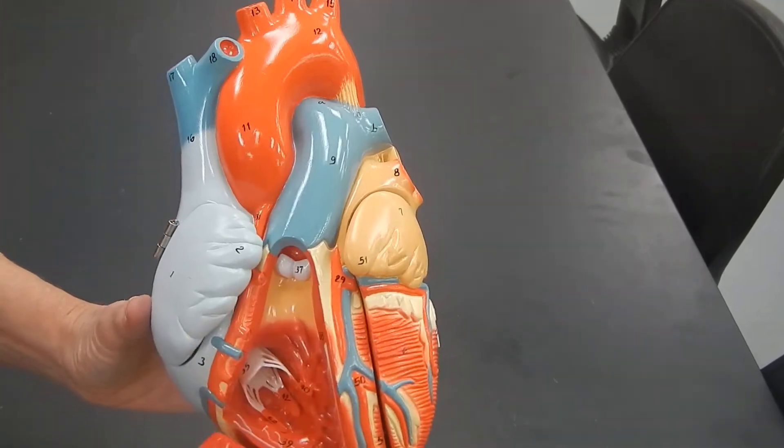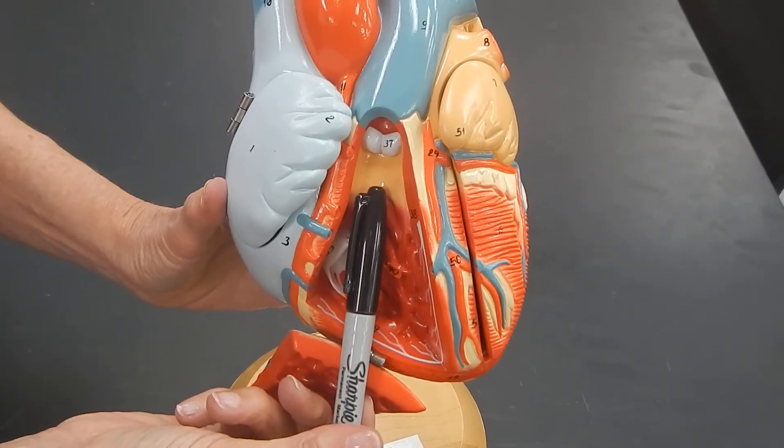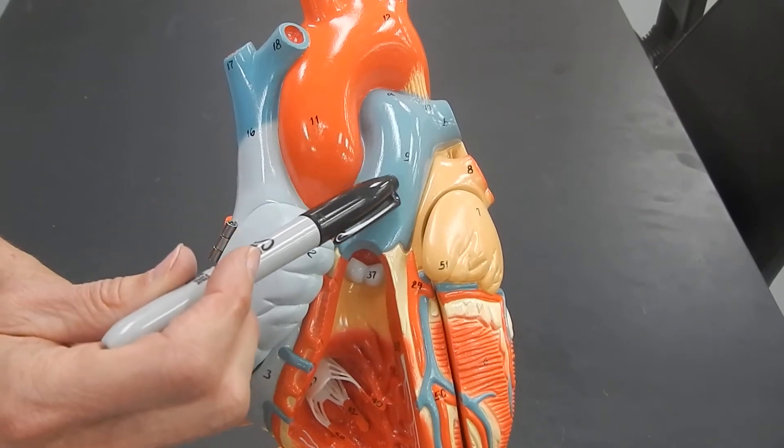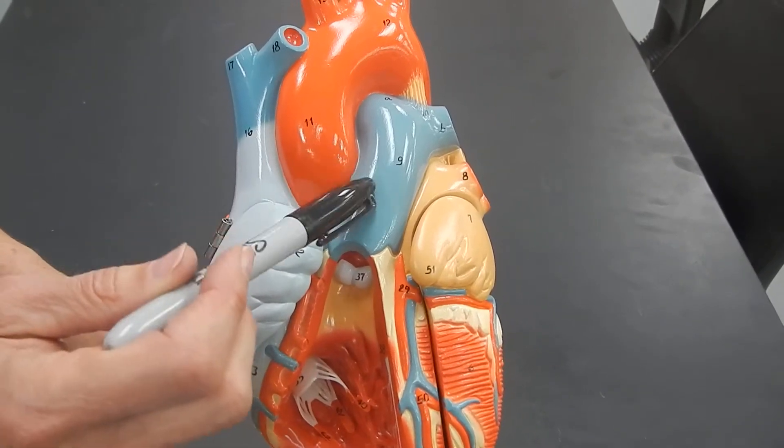This is the right ventricle. Blood leaves the right ventricle through this blue blood vessel called the pulmonary artery. This is an artery, but it's blue.